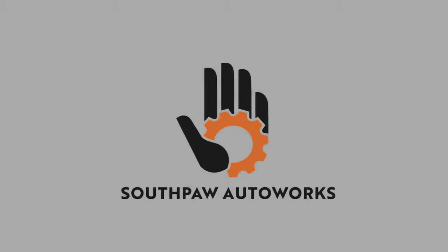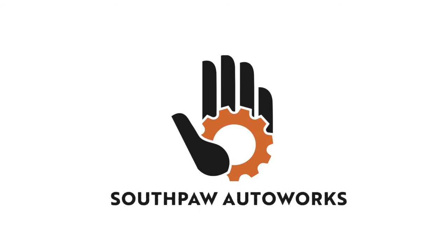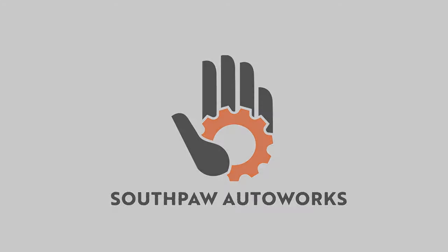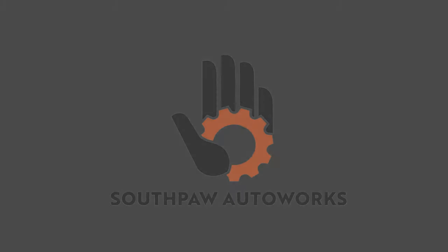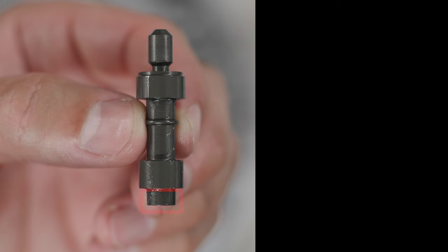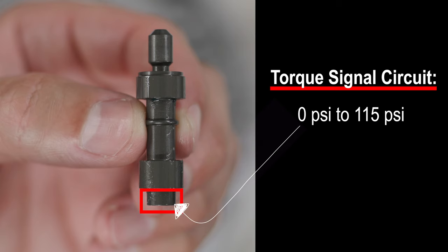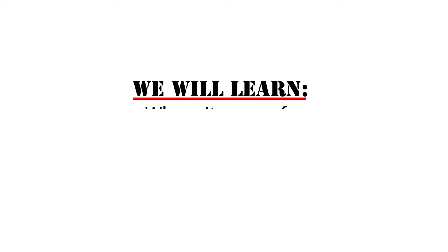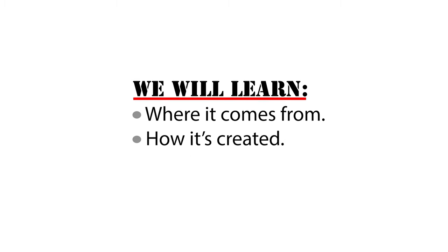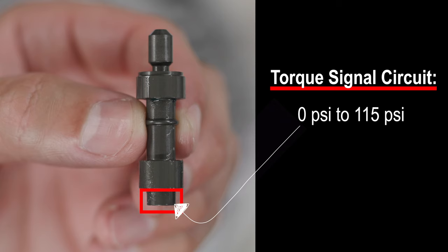What's going on? My name is Robert and you are watching Southpaw Auto Works. This video is all about the torque signal circuit in the 4L60E transmission. We're going to cover things like where it comes from, how it's created, and some outside influences on this torque signal circuit.